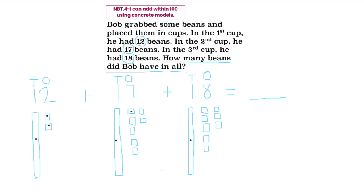Continuing to count on by ones: 35, 36, 37, 38, 39, 40, 41, 42, 43, 44, 45, 46, 47. So I see that Bob had 47 beans in all.